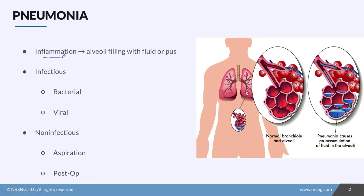Pneumonia is an inflammatory process within the lungs that causes the alveoli to fill with fluid or pus. You can see here how the alveoli have accumulated with fluid. Here would be your healthy alveoli free of fluid, and here would be alveoli with pneumonia with fluid sitting at the bottom. Alveoli filled with fluid do not allow for efficient gas exchange, so this is definitely going to cause some problems.